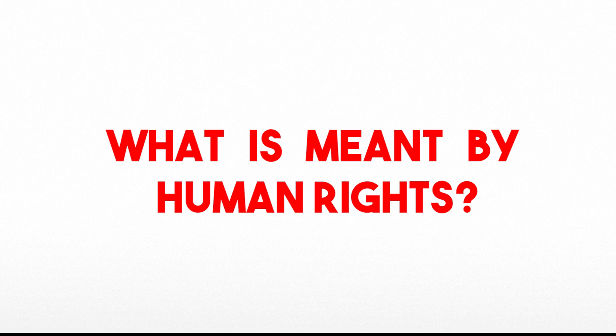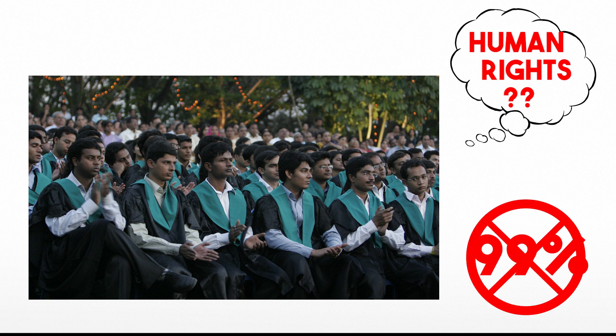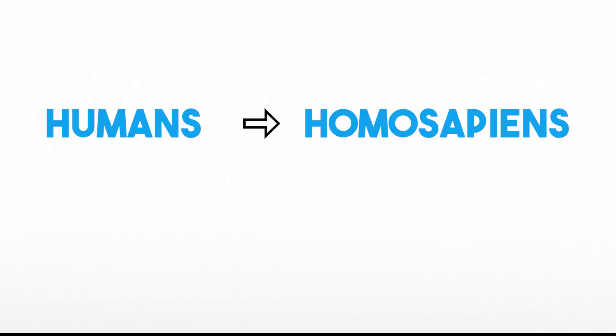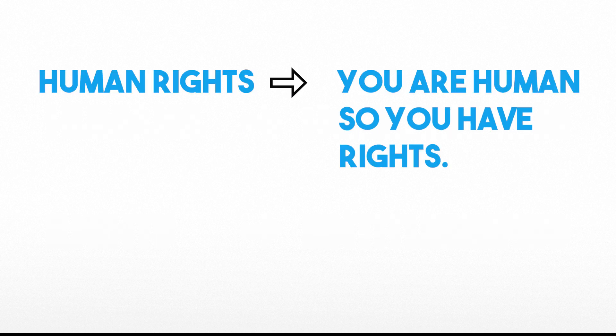What is meant by Human Rights? If you ask this question to 100 graduates, there is a possibility that 99% would not be able to answer this question satisfactorily. Humans means Homo sapiens, which includes men, women and children — that means all human beings. Rights convey entitlements. Human Rights means rights you have simply because you are human.